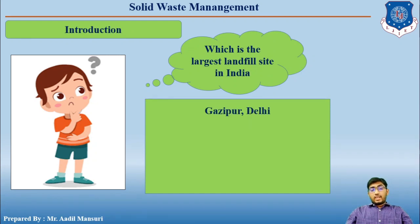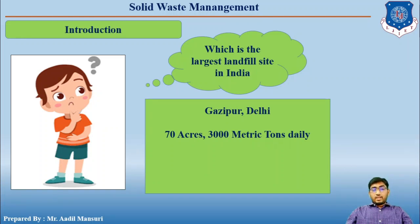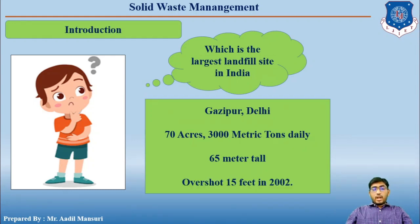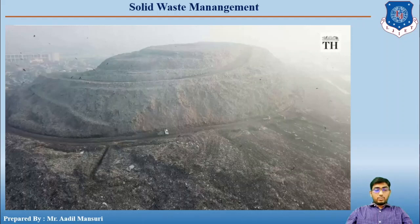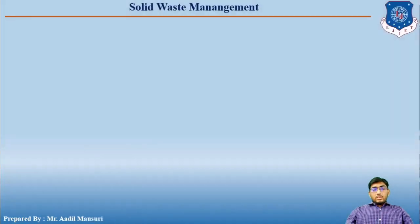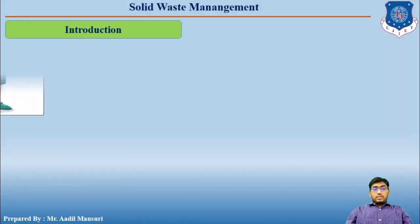The answer is Ghazipur, which is located in Delhi. It has 70 acres of land, and on a daily basis 3,000 metric tons of solid waste is dumped there. It is 65 meters tall and was already overshot by 15 feet in 2002. Let me show you a picture so you get clarity of how this Ghazipur landfill site looks.